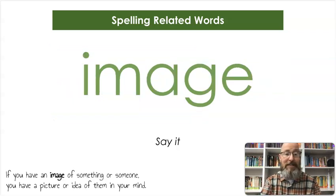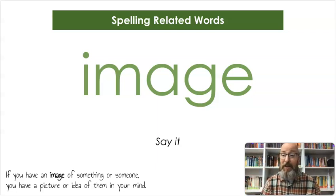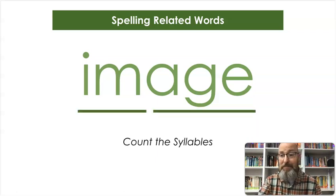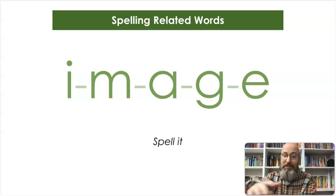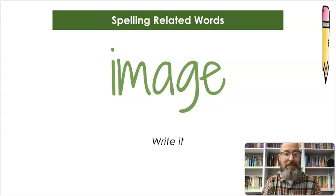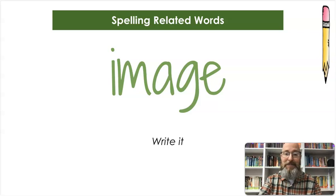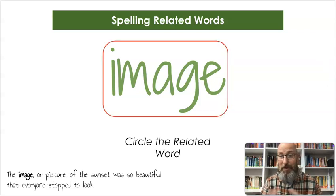Our next word is image. If you have an image of something or someone, you have a picture or idea of them in your mind. Let's count the syllables — im-age, image. And let's write it: I-M-A-G-E. We're going to circle the whole word. The image, or picture, of the sunset was so beautiful that everyone stopped to look.